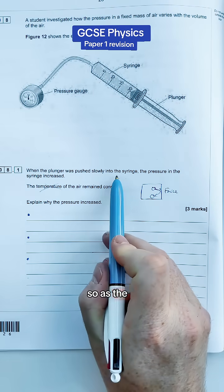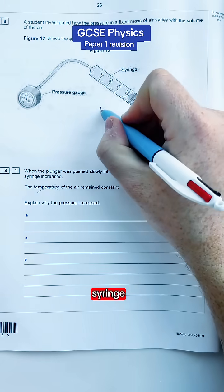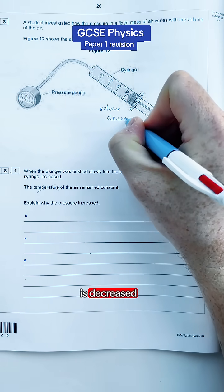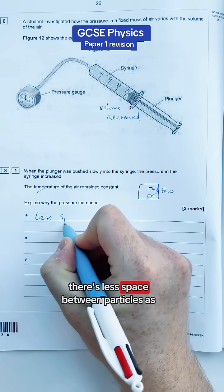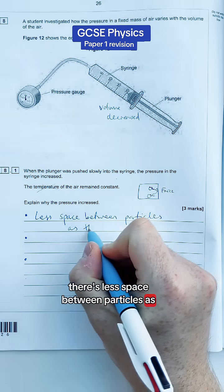So as the plunger gets plunged slowly into the syringe, the idea is that the volume is decreased. So as the volume is decreased we say something like there is less space between particles as there is less volume.